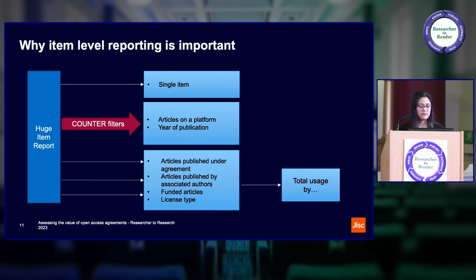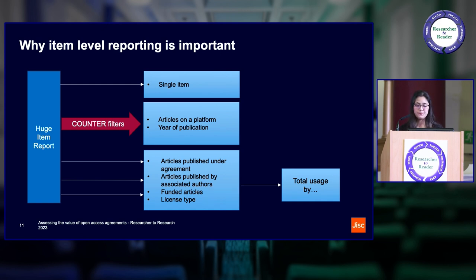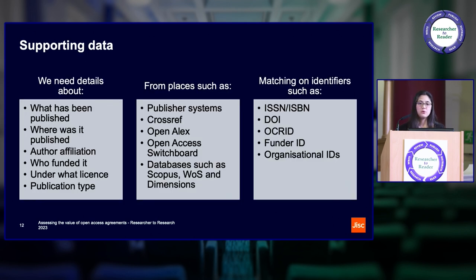We can quickly see that title-level granularity really isn't sufficient. It makes sense to think about the item as the basic unit of reporting, so that we can extract that data and aggregate it up by any attribute, whether it's in the Counter report or not. The Counter reports can't do this job on their own, which is where the importance of quality metadata, persistent identifiers and infrastructure comes in. In order to make full and effective use of item data to inform our evaluation of OA agreements, we need to have metadata about the item — what's been published, where it's been published, the author affiliation, who funded it.